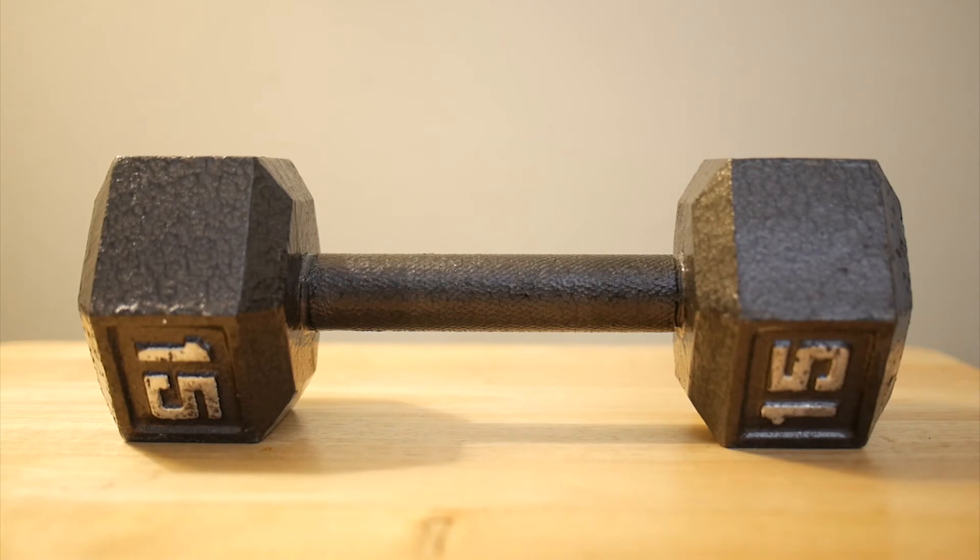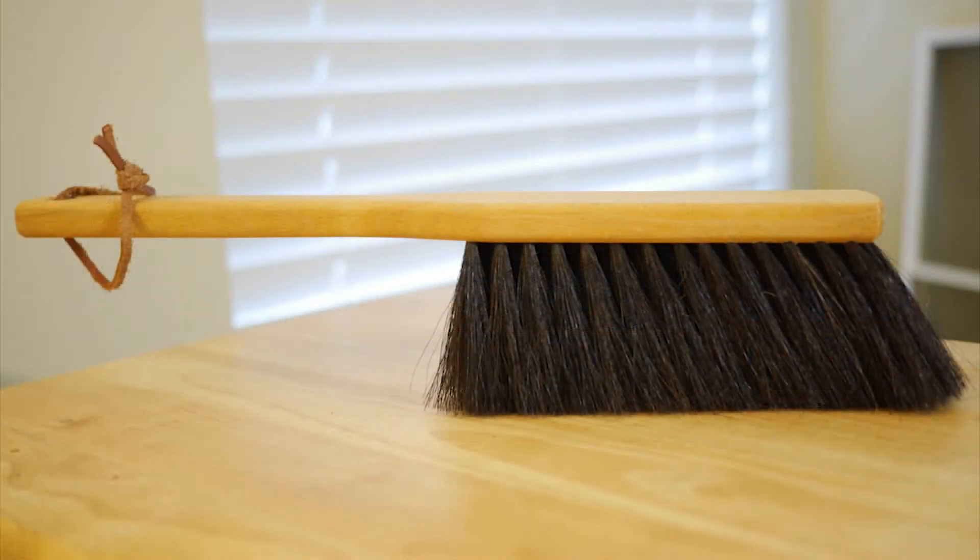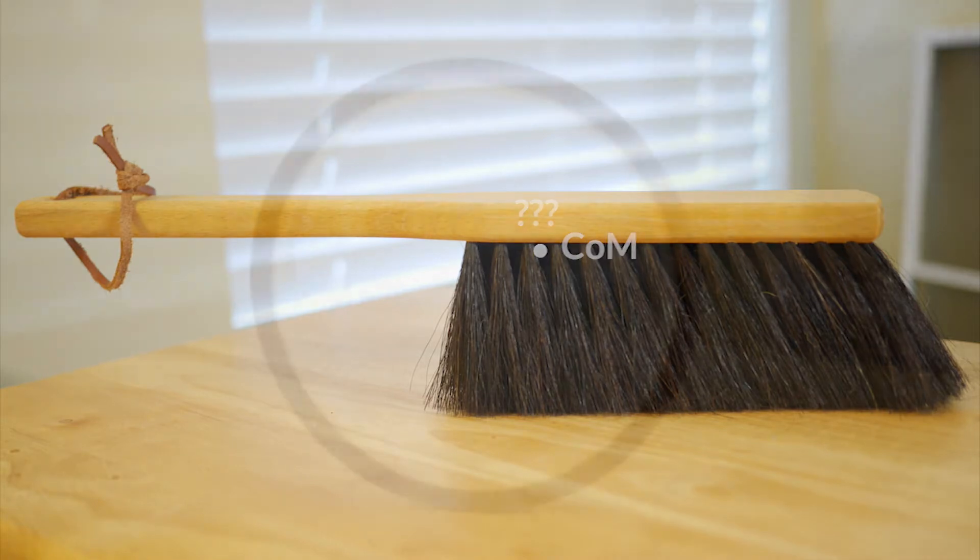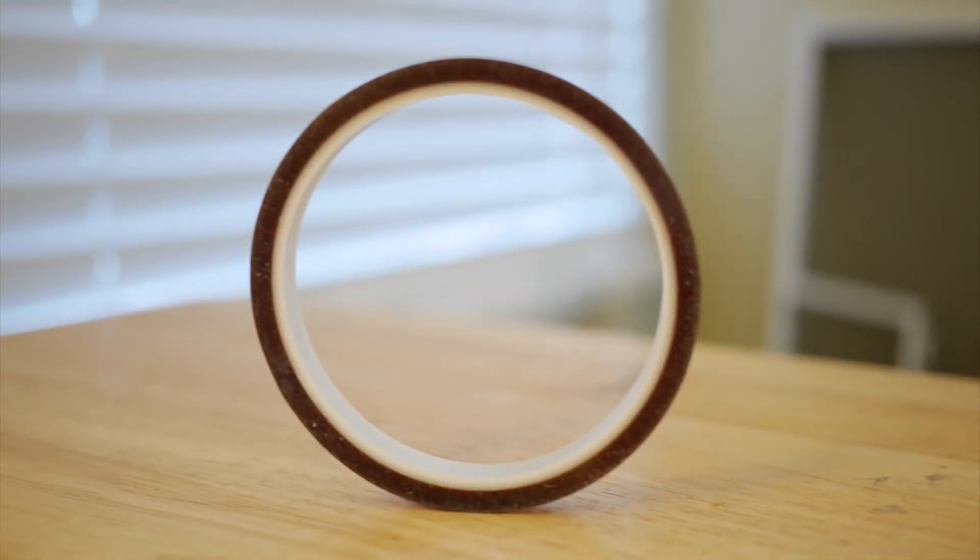How about this dumbbell? As you guessed it, it's around here. As the object becomes asymmetrical, it becomes harder to know the exact location of center of mass. For example, the brush has more weight on the head, so the center of mass might be around the head. How about this tape? The center of mass of this tape is here. The thing about center of mass is that it doesn't need to be on the object.